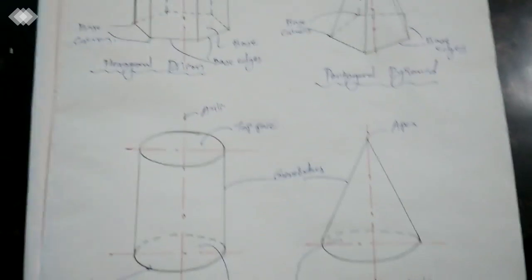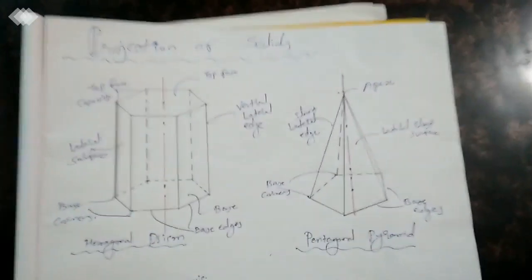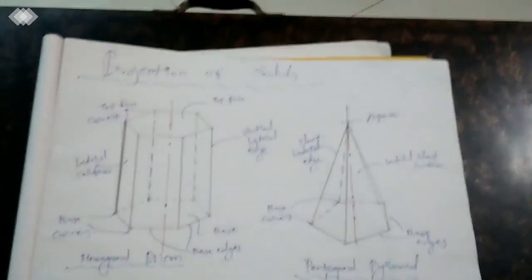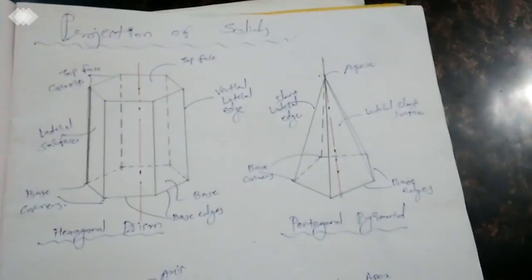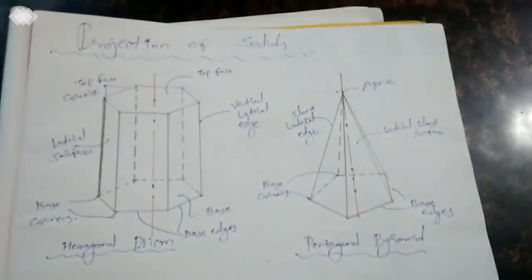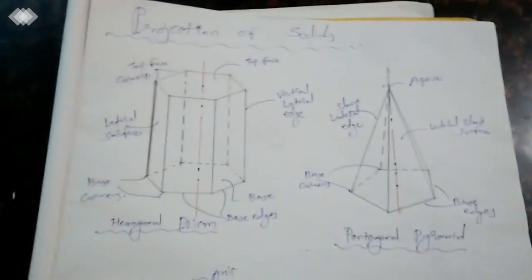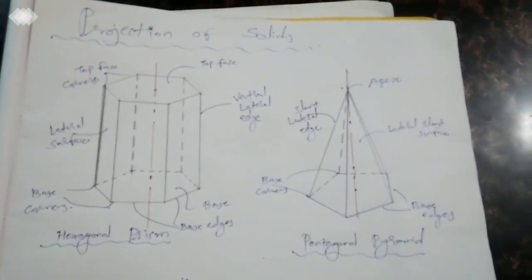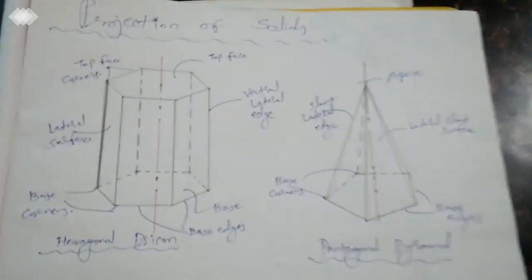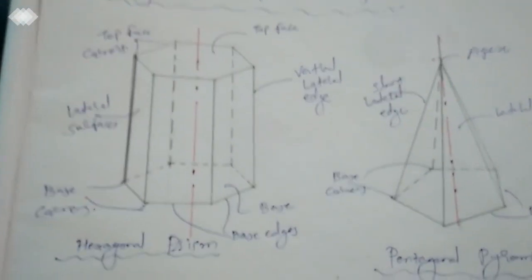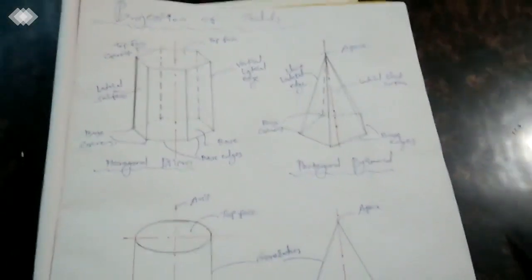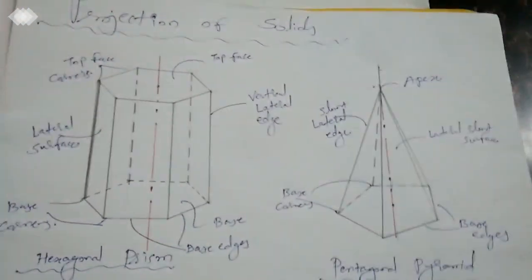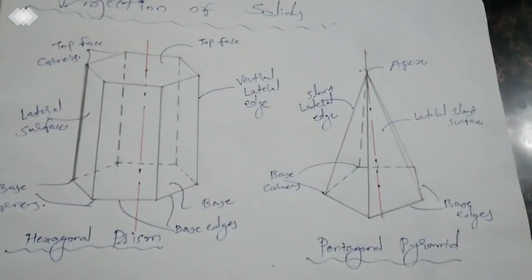Altogether four different kinds of solids are there, which I have drawn here — you can have a look over it. We will clarify the elements of each one by one. Different kinds of elements are there; these elements are mentioned in the exercises and will be asked during exams. So we will see what those elements are for each of the four different kinds of solids.